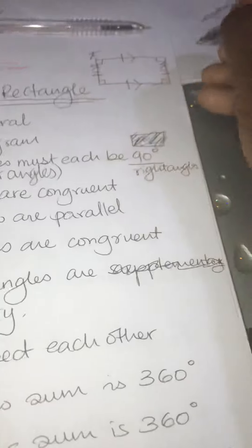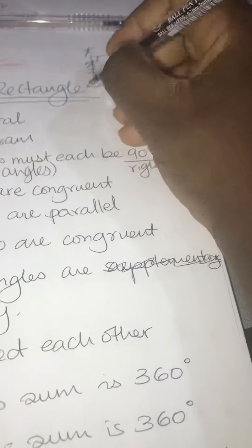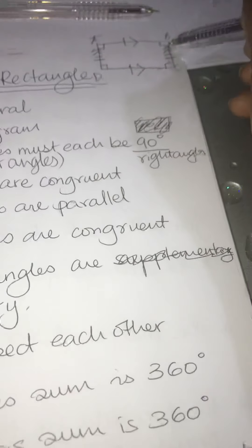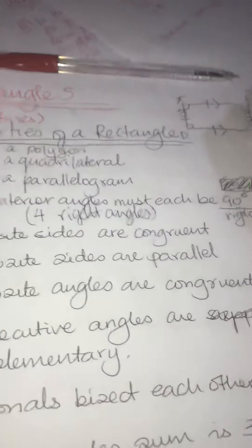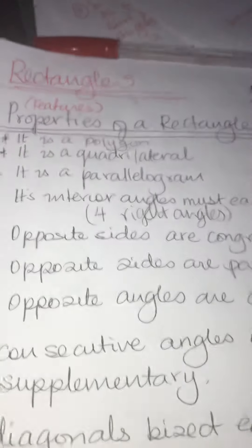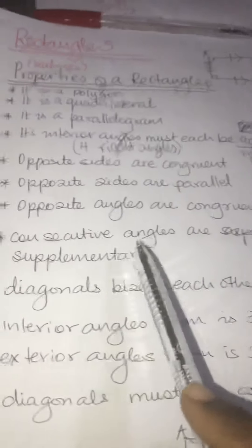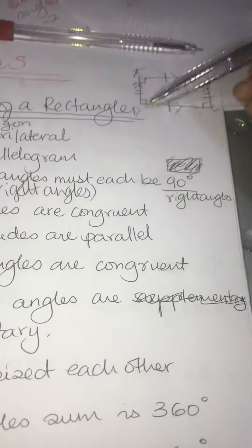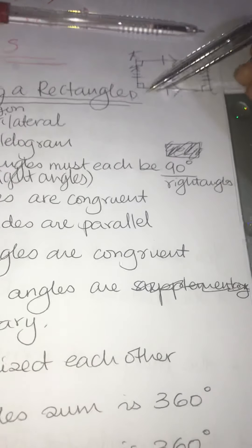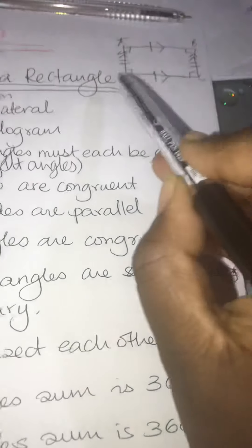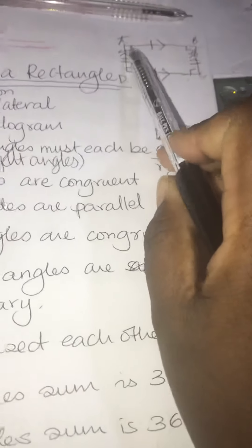Let me label the corners A, B, C, D. Angle A is opposite to C — they must be equal. Angle D is opposite to B — they must be equal. Opposite angles will always be congruent if you are a parallelogram. Consecutive angles are supplementary: A plus D gives 180 degrees, B plus C gives 180 degrees, D plus C gives 180 degrees, and A plus B gives 180 degrees.